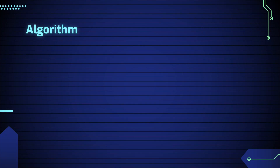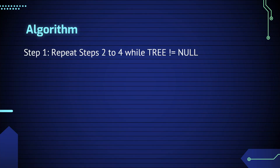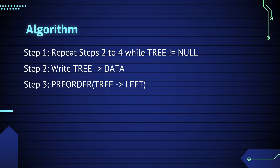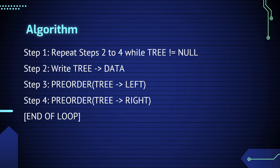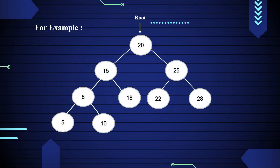Algorithm for pre-order traversal: Step 1 - Repeat steps 2 to 4 while tree is not equal to null. Step 2 - Write tree data. Step 3 - Pre-order tree left. Step 4 - Pre-order tree right. End of loop. Step 5 - End.